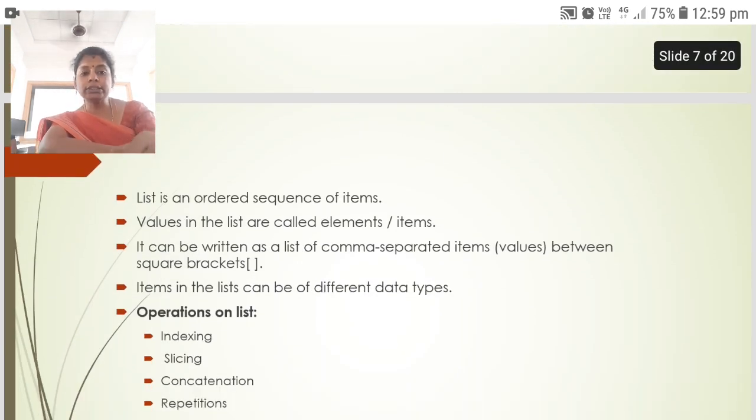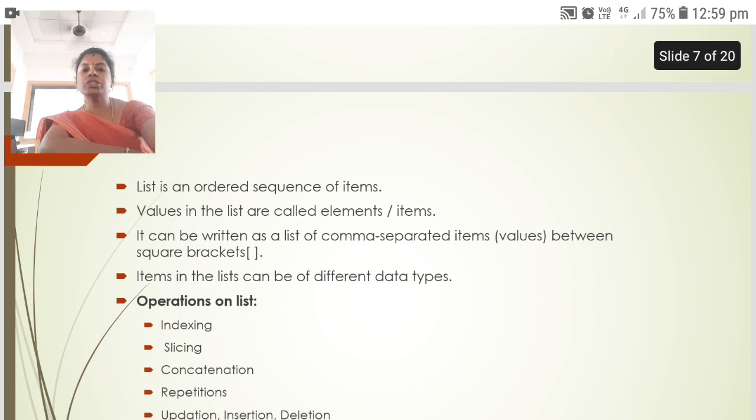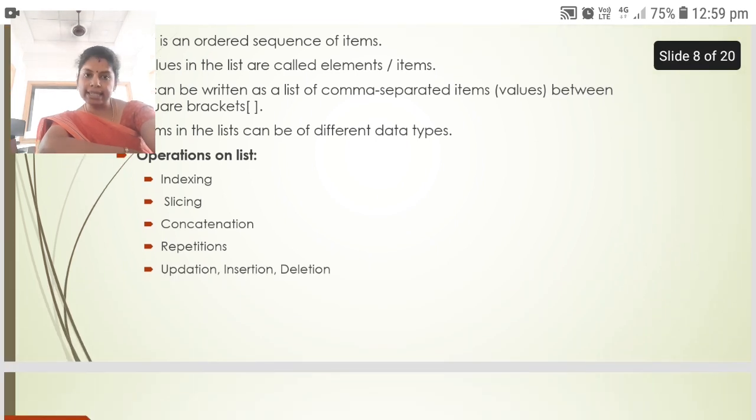List is an ordered sequence of items. Values in the list are called elements or items. It can be written as a list of comma separated items. Items in the list can be of different data types. Operations on list are indexing, slicing, concatenation, repetitions, updation, insertion and deletion.